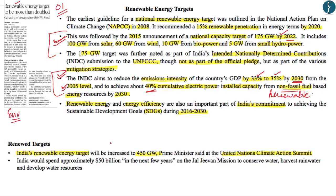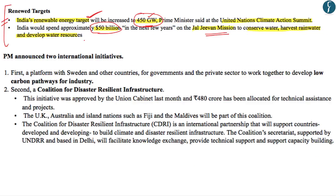Moreover, Prime Minister Narendra Modi also stated that India will spend approximately 50 billion dollars in the coming few years on the Jal Jeevan Mission to conserve water, harvest rainwater, and develop water resources. These are the two announcements with respect to renewable energy: that India is likely to increase its renewable energy target to 450 GW and that it will invest almost 50 billion dollars on the Jal Jeevan Mission. In addition, Prime Minister Modi announced two international initiatives: firstly, India, Sweden, and other countries are going to create a platform for both government and private sectors to develop low carbon pathways for industries.